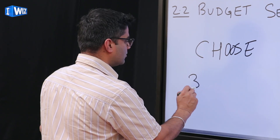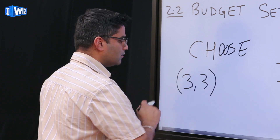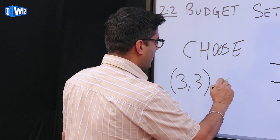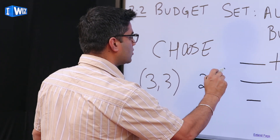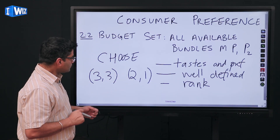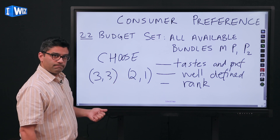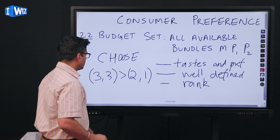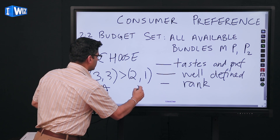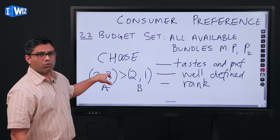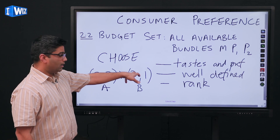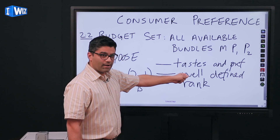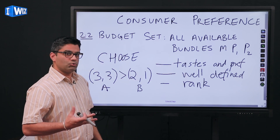For example, if I give you two bundles — bundle A with three units of good one and three units of good two, and bundle B with two units of good one and one unit of good two — you should be able to tell me which you prefer. Bundle A is always going to be preferable to bundle B because we have more of both x1 and x2 in A relative to B. That's what we mean by being able to rank them.